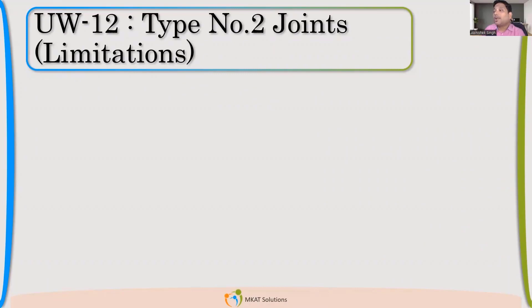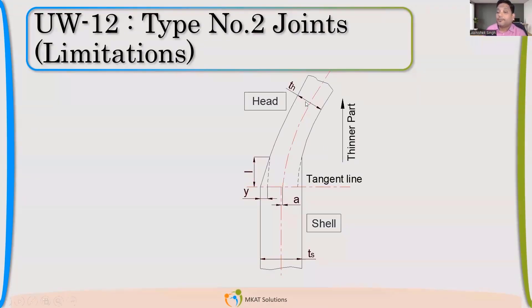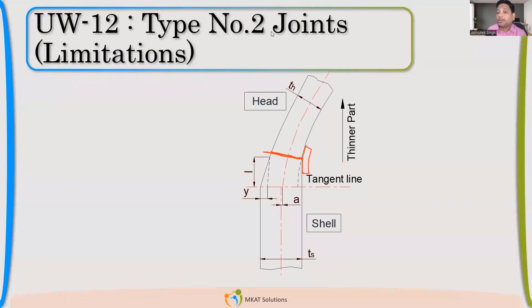There is also a limitation for type number 2. If I want to use a backing strip, I need a flat surface. I cannot have a non-uniform surface where I am not able to put the backing strip properly. So if there is welding on such a surface, that joint cannot be qualified as type number 2.